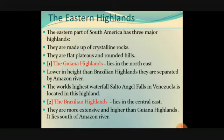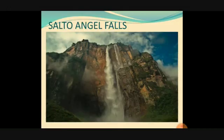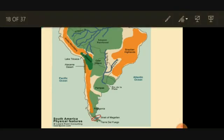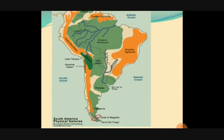The next one is the Brazilian Highlands, which lies in the central-east. They are more extensive and higher than the Guiana Highlands, and lie south of the Amazon River. The most important feature is the Salto Angel Falls, the highest waterfall, located in Venezuela. You can see the Guiana Highlands in the north and the Brazilian Highlands on the eastern side.